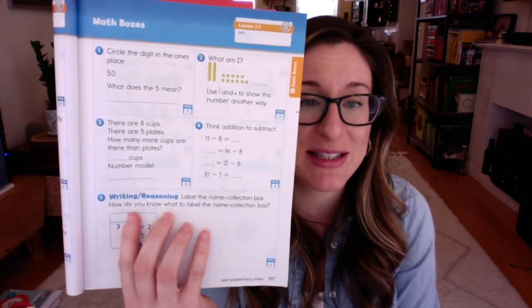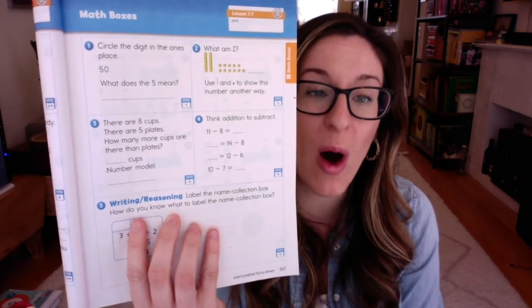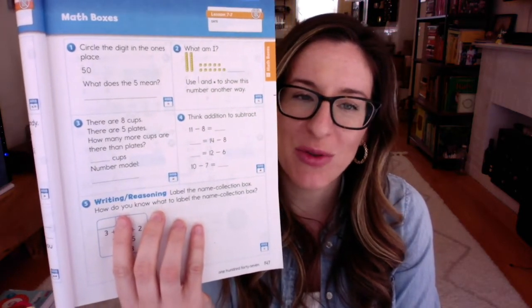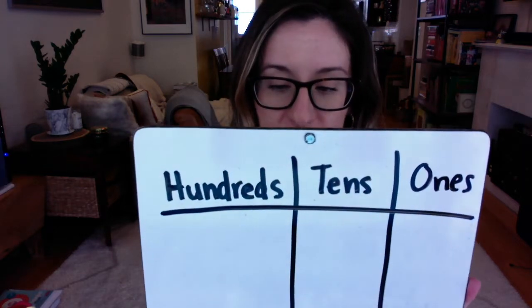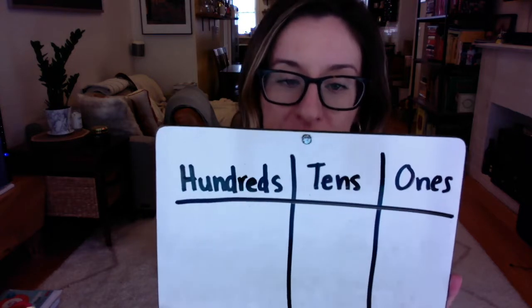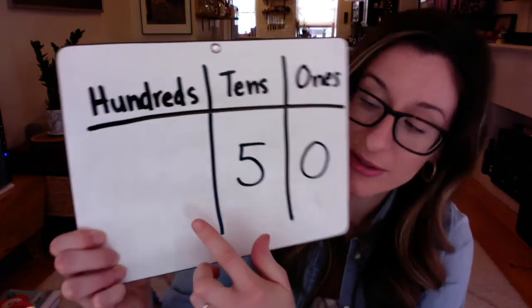Okay, let's move on to math boxes. If you want to do math boxes with me, then stick around and follow along with the video. Otherwise, go ahead and do them by yourself. We are on page 147 today - that's math boxes 7-7. Number 1 says circle the digit in the 1's place. It shows the number 50. We can make a chart that shows place value, with the 100's, the 10's, and the 1's columns. If I was writing down the number 50, I would say there are 5 tens and 0 ones.